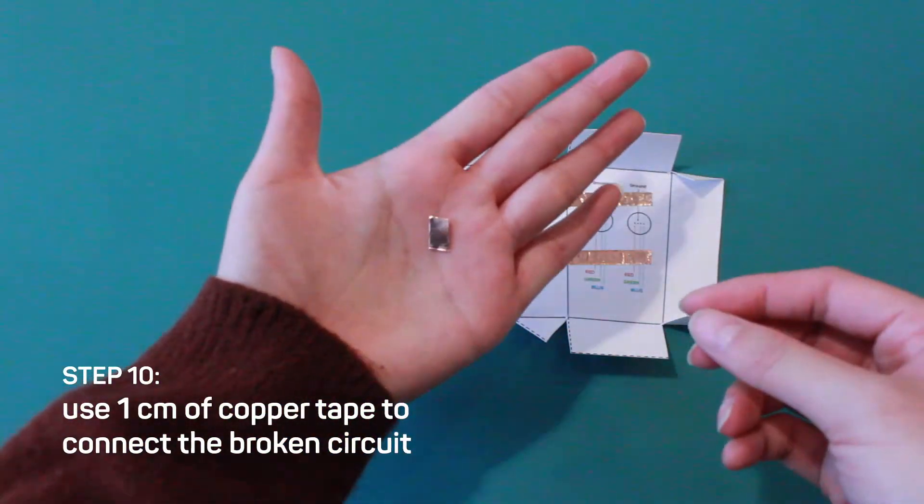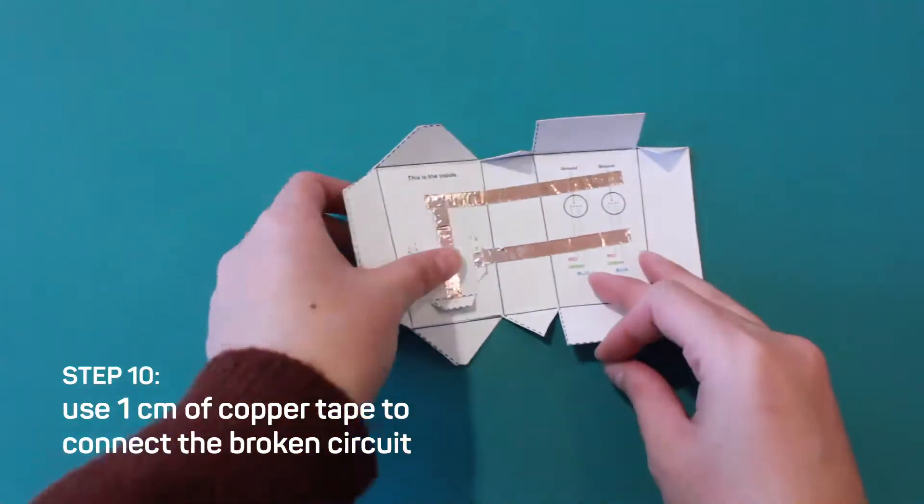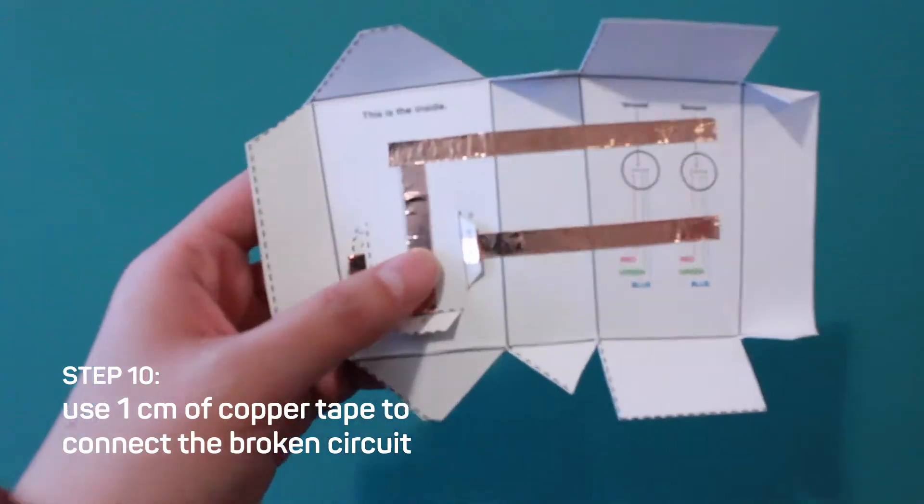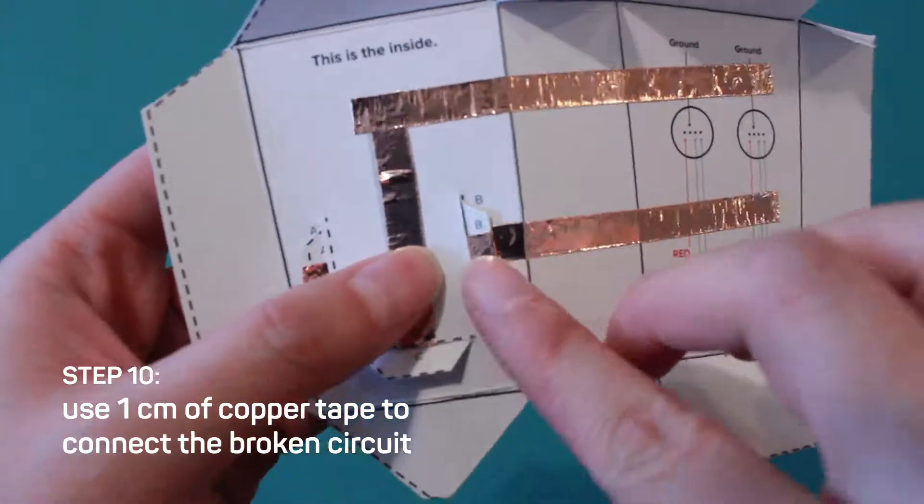Step 10, use one centimeter of copper tape to connect the broken circuit from slit B and line four. If you miss this step, your circuit won't work.